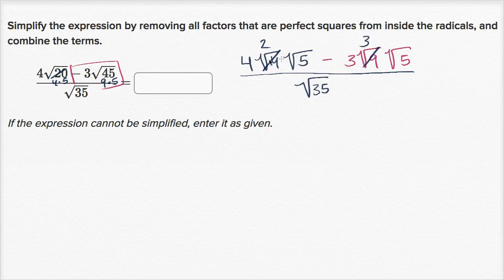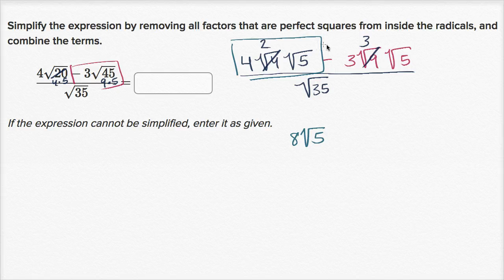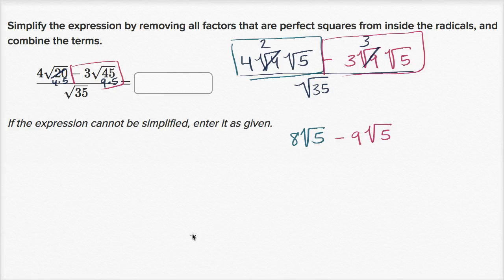So this part is going to be four times two times the square root of five, which is eight square roots of five. And then this part is going to be minus three times three times the square root of five, so minus nine square roots of five. And all of that is over the square root of 35.